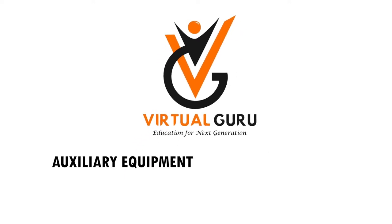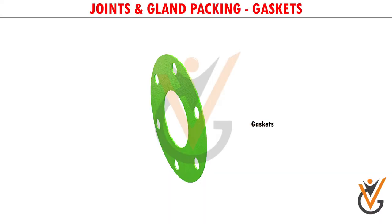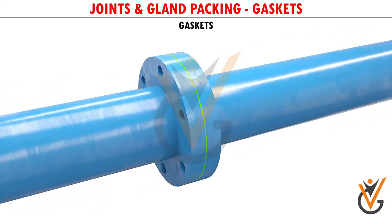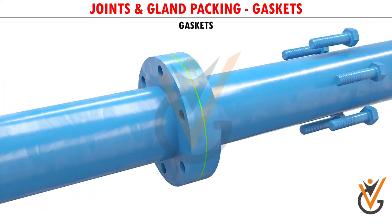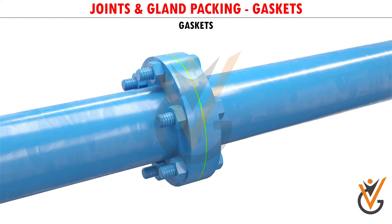Auxiliary Equipment and Maintenance Work: Joints and Gland Packing. A gasket is meant to form a mechanical seal that fills the space between two or more mating surfaces. Its goal is to prevent leakage from or into the joined objects while under compression.